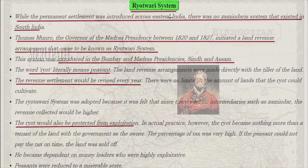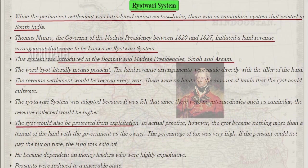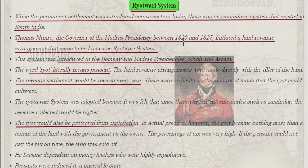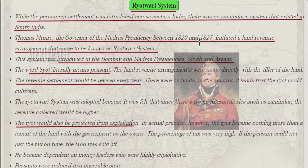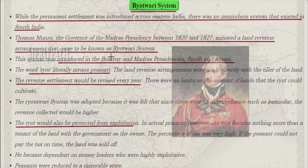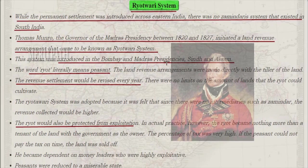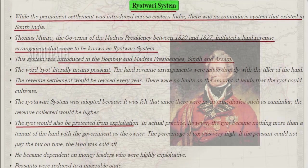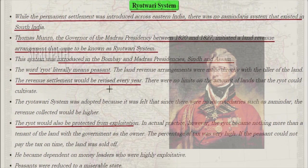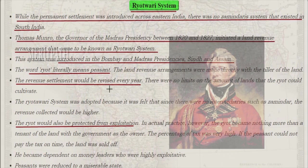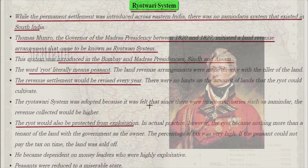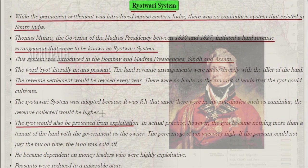Ryotwari System: while the Permanent Settlement was introduced across Eastern India, there was no Zamindari system in South India. Thomas Munro, the Governor of Madras Presidency between 1820 and 1827, initiated a land revenue arrangement known as the Ryotwari System. This system was introduced in Bombay and Madras Presidencies, Sindh and Assam. The word 'Riyat' means peasant. Revenue arrangements were made directly with the tiller of the land, and revenue would be revised every year. There were no limits on the amount of land that the Ryot could cultivate. The system was adopted because, with no intermediaries such as zamindars, the revenue collected would be higher.